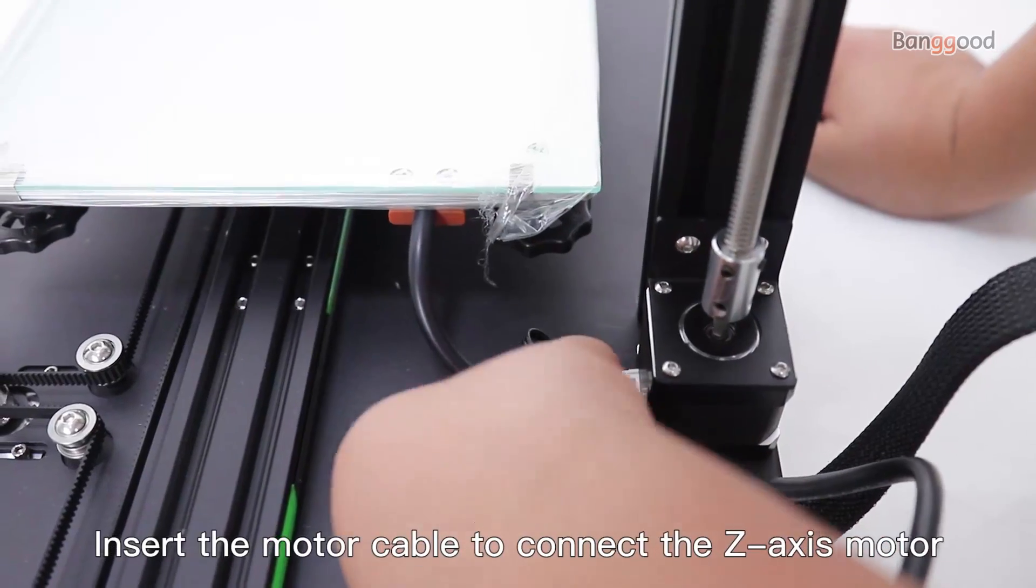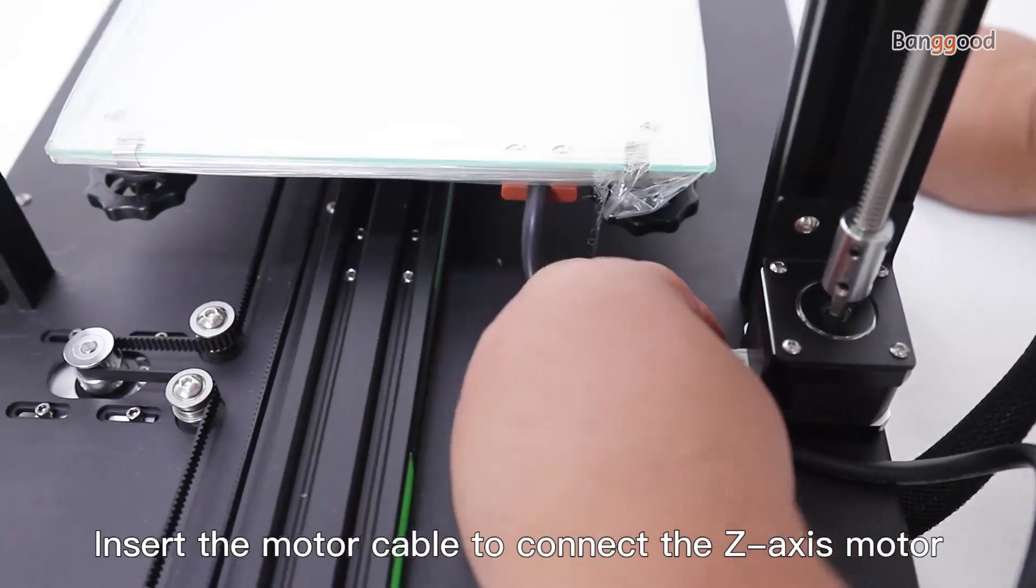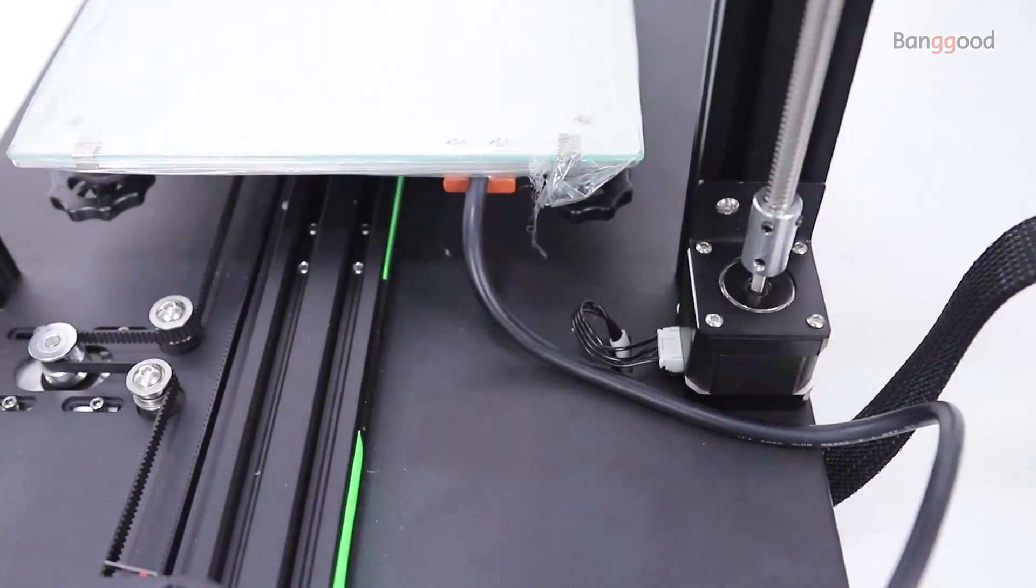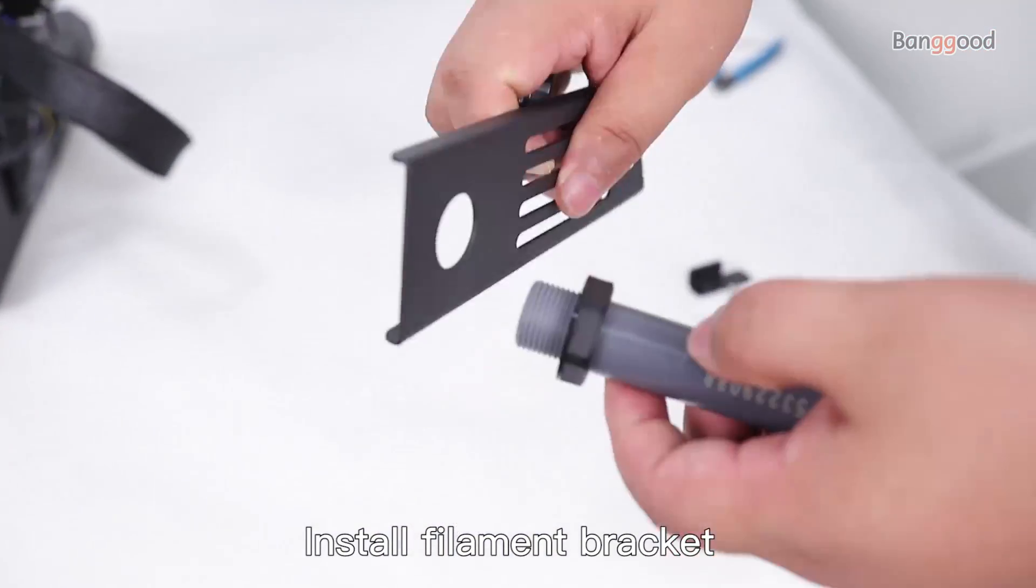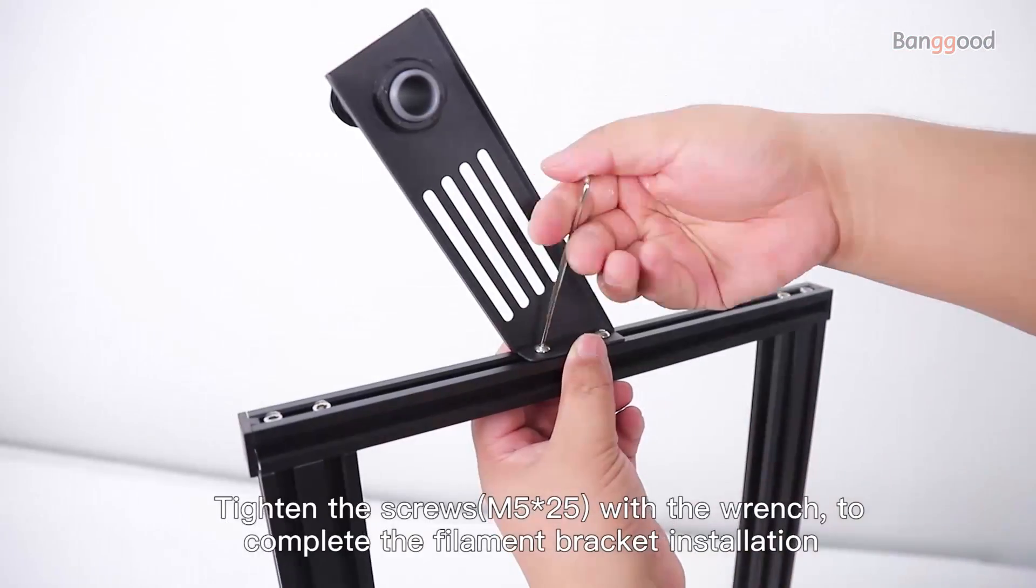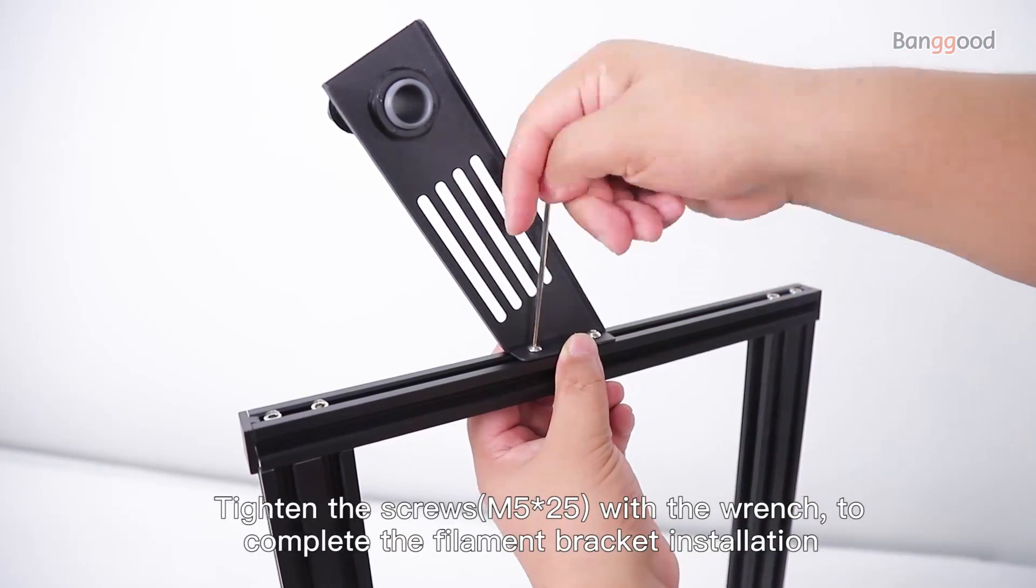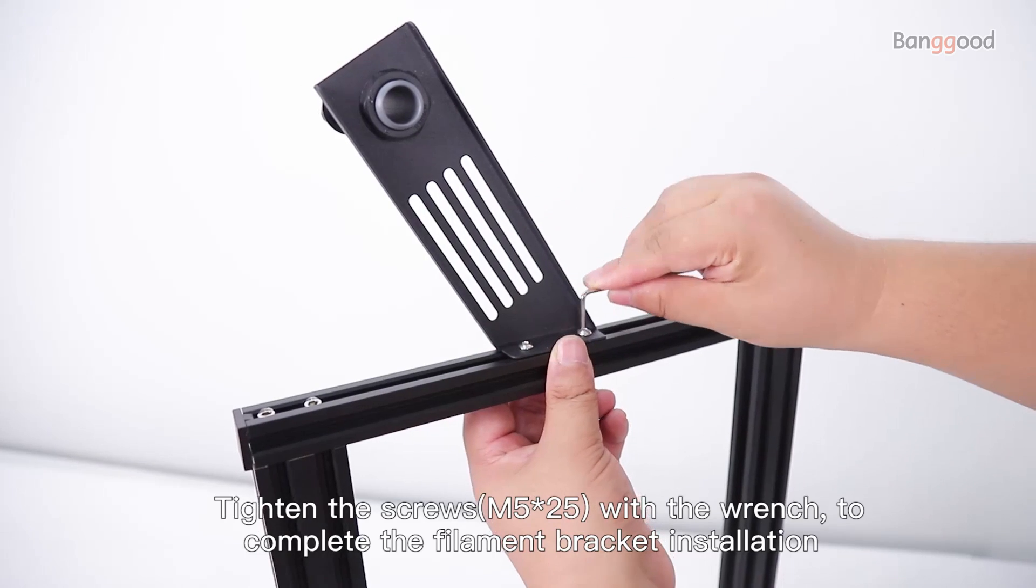Insert the motor cable to connect the Z and X motors. Install the filament bracket and tighten the screws with the wrench to complete the filament bracket installation.